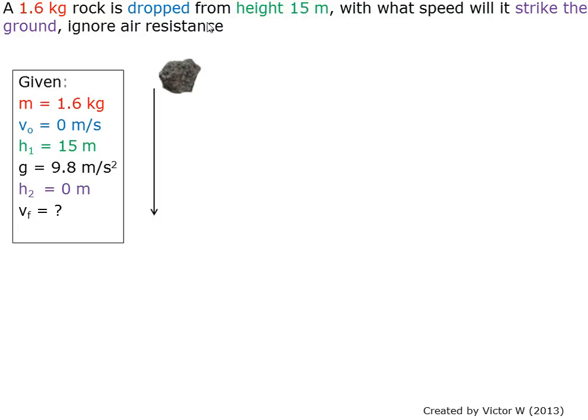A 1.6 kilogram rock is dropped from height 15 meters. With what speed will it strike the ground? Ignore air resistance.